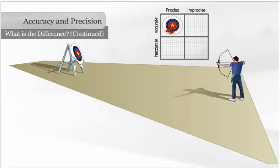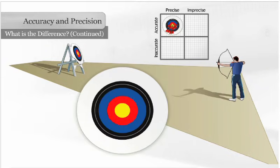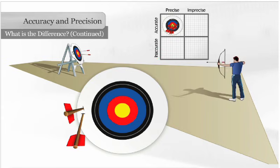It is also possible for the archer to be precise but inaccurate. If he misses the bullseye, he is inaccurate. He has missed the mark. But if he can consistently and repeatedly hit the target in the same place, even if it is not the bullseye, he is precise.